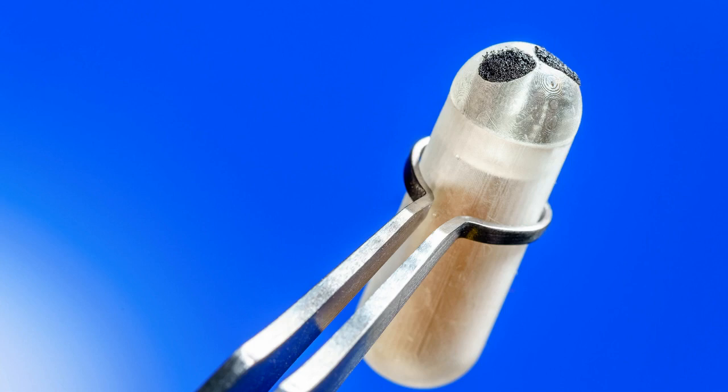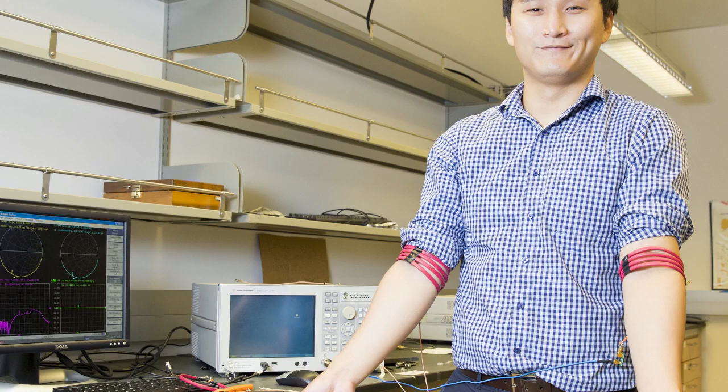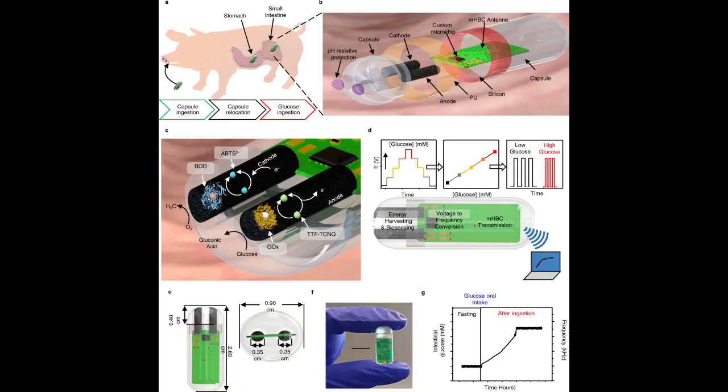The unique battery-free operation is made possible by the team's glucose biofuel cell BFC for obtaining power during operation while simultaneously measuring changing glucose concentrations. Its energy-efficient magnetic human-body communication M-HBC scheme operates in the 40 to 200 MHz range to receive the time-resolved transmitted signals.